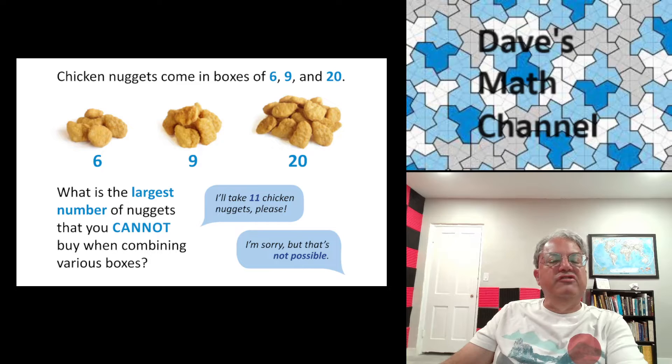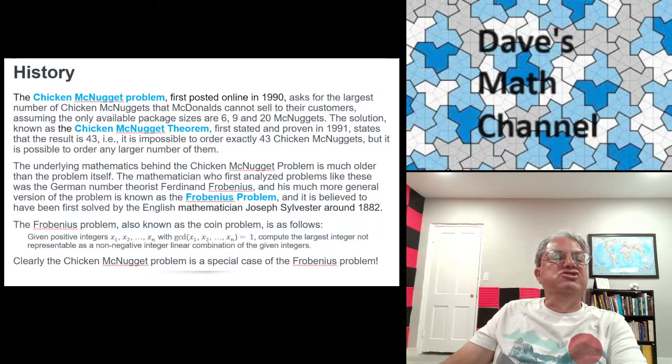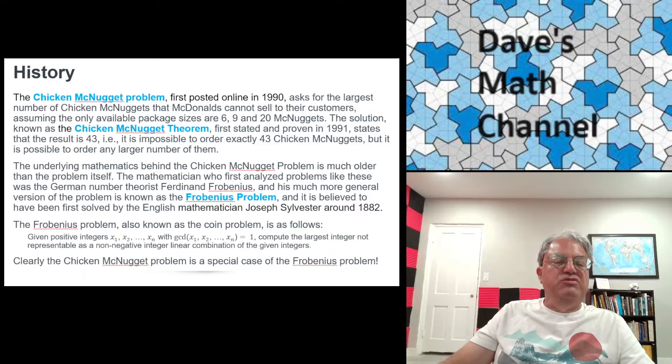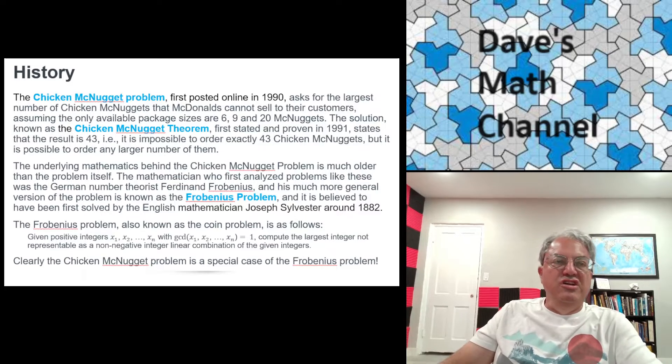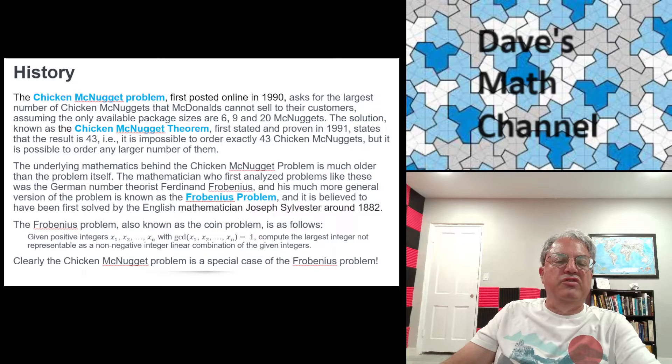And it turns out there is. It turns out the answer is 43. This is known as the Chicken McNugget theorem. And so the answer to the problem, the largest number of Chicken McNuggets that you can't purchase, if you can only purchase them in sizes of six, nine, and 20 McNuggets is 43.